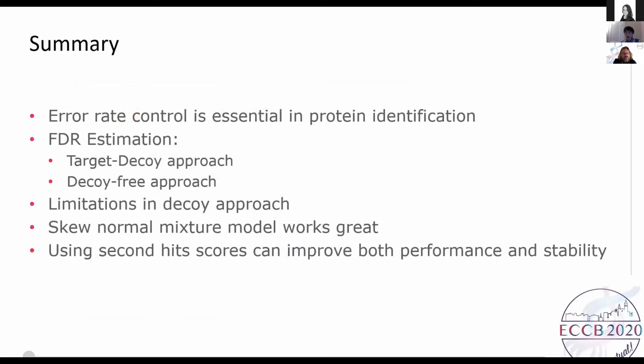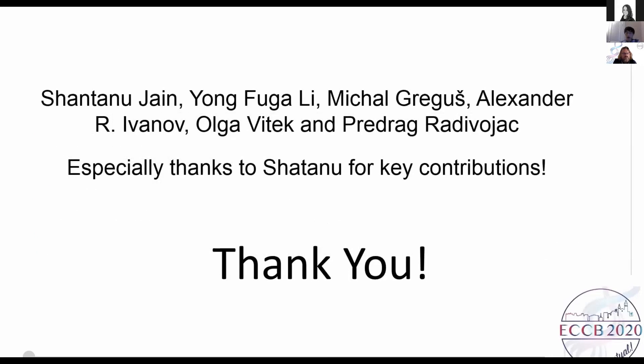In summary, error rate control is essential in protein identification, and this is also true for FDR estimation, which can be done in two major approaches: the target decoy approach and the decoy-free approach. Although the decoy approach is straightforward and easy to use, there are many limitations. We found in our study that the skew-normal mixture model works great in FDR estimation, and using second hit scores can improve both the performance and the stability. I have to thank all the authors in our team, and especially thanks to Shano for the key contributions.